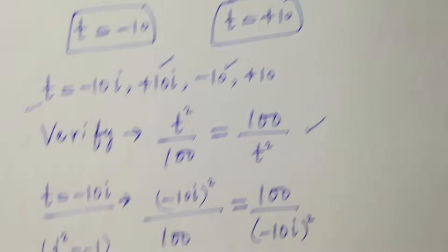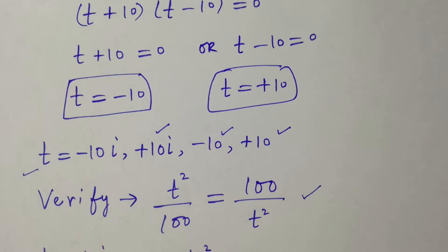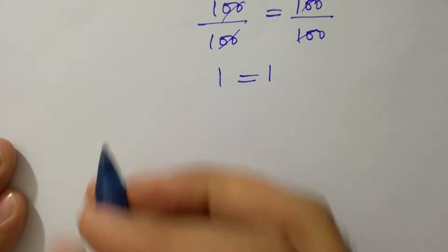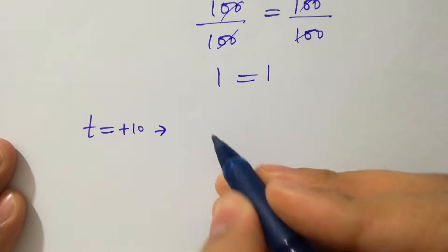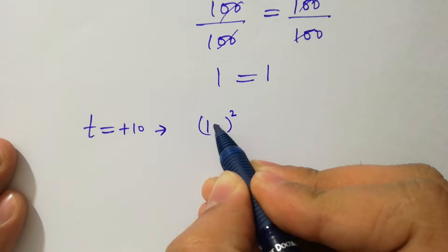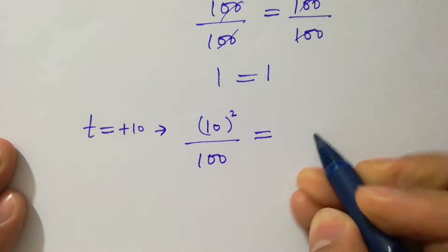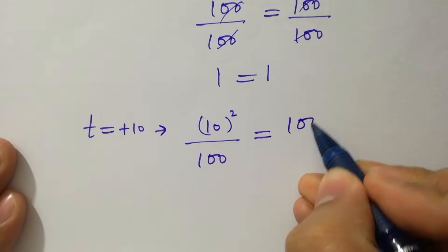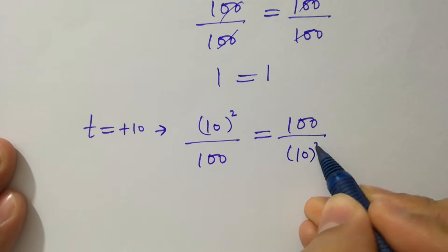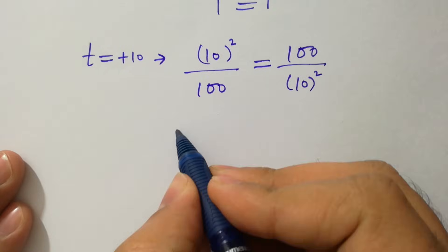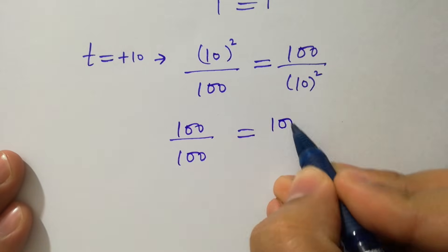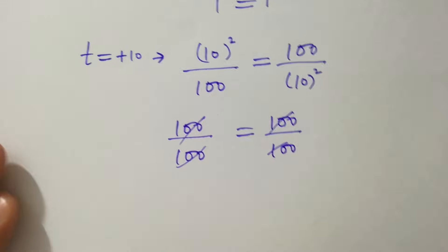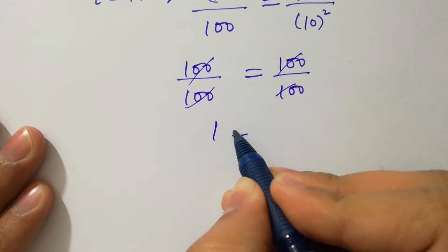Now take t equal to plus 10 and put into this equation. We have t square, which is 10 square, over 100 equal to 100 over 10 square. 10 square is 100, so we have 100 over 100 equal to 100 over 100. 100 cancels and we get 1 equal to 1.